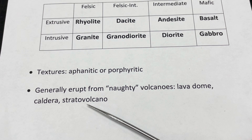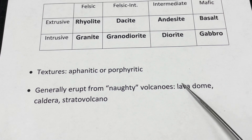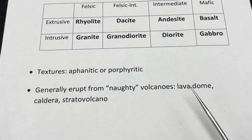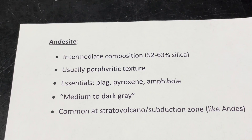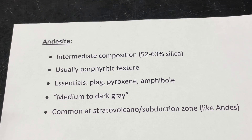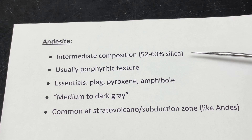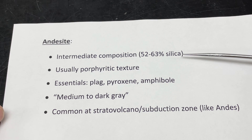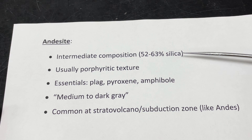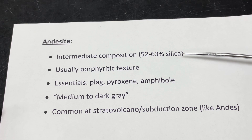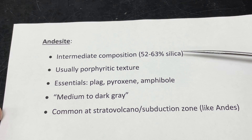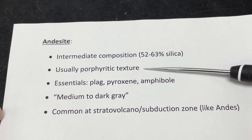Stratovolcanoes are great examples of the volcanic edifices that tend to produce the three rock types we're looking at today. Andesite tends to be intermediate in composition — more silica than basalt, but not as much as rhyolite. You can't really determine silica percentages in hand sample; that level of detail needs to be done in a lab. Andesite is usually porphyritic in texture, which is a helpful identifying feature.